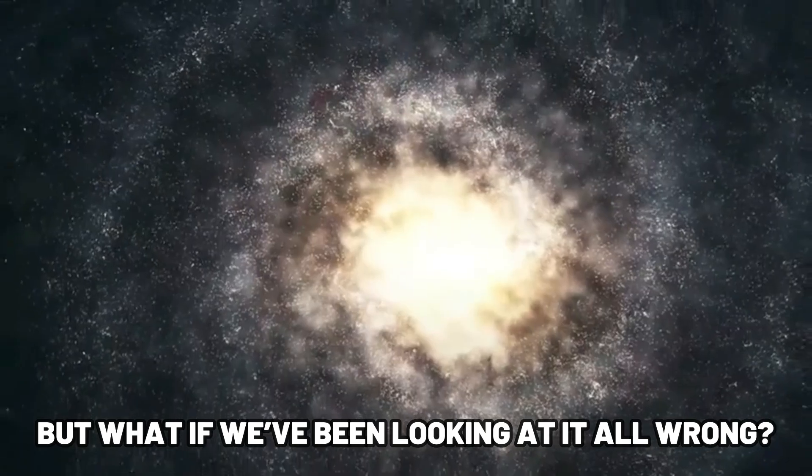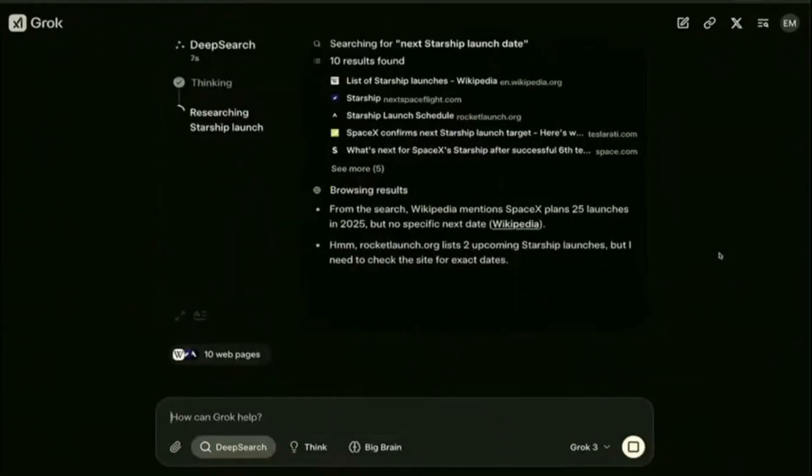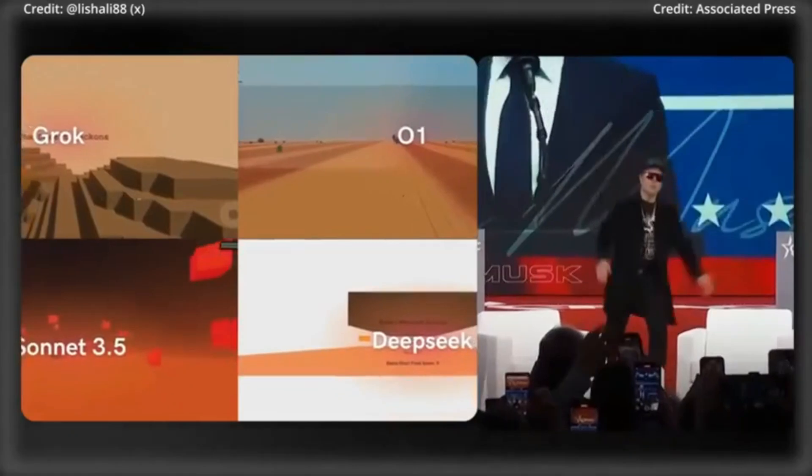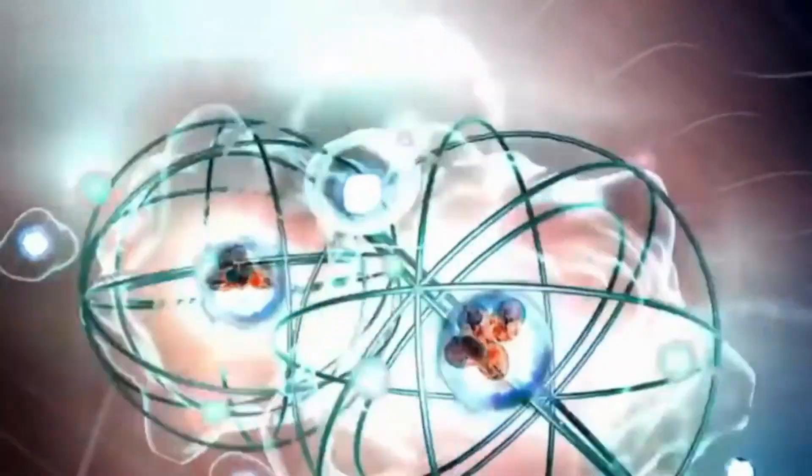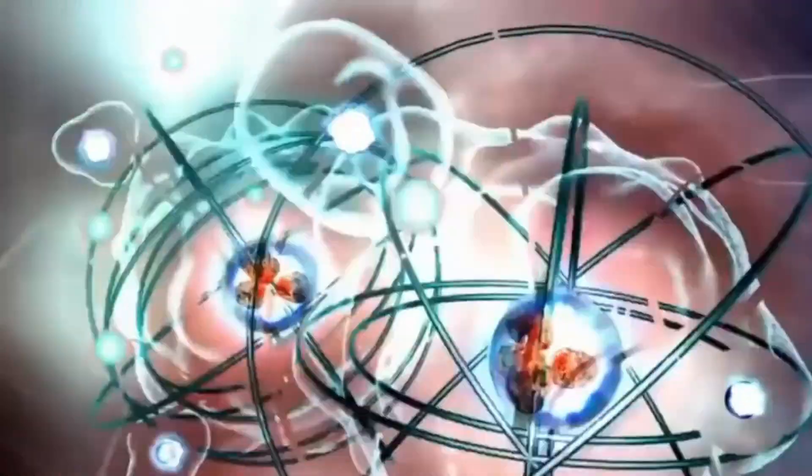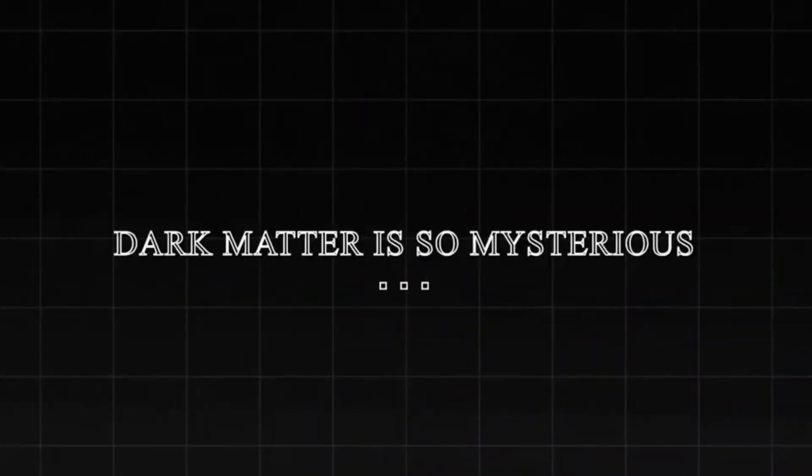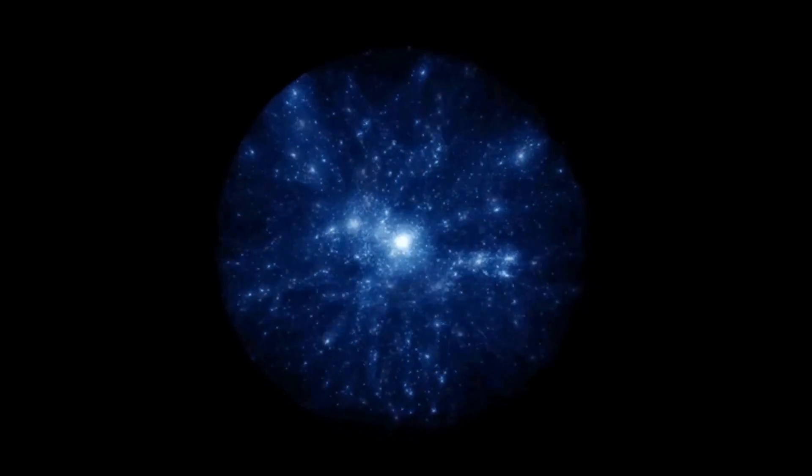But what if we've been looking at it all wrong? Grok 3, an AI developed by Elon Musk's XAI, has just analyzed an unprecedented amount of cosmic data. Its findings are so bizarre that even physicists like Michio Kaku are questioning everything they thought they understood about the universe.